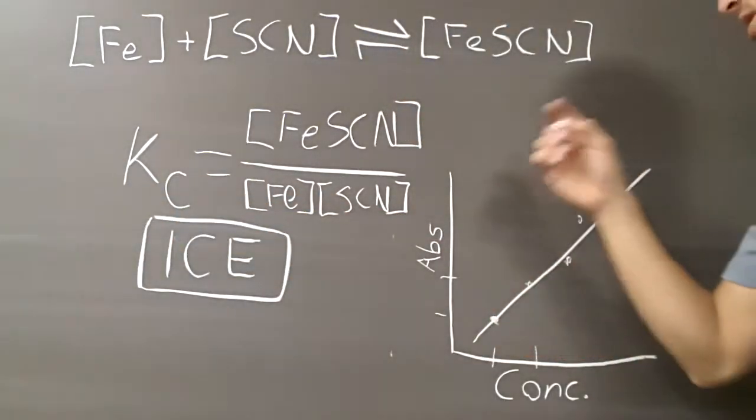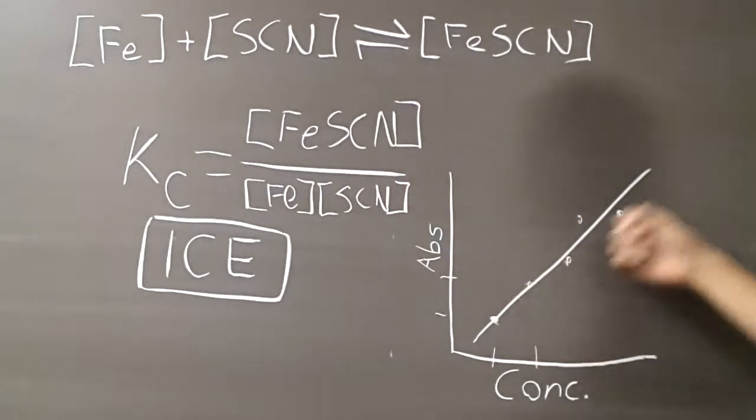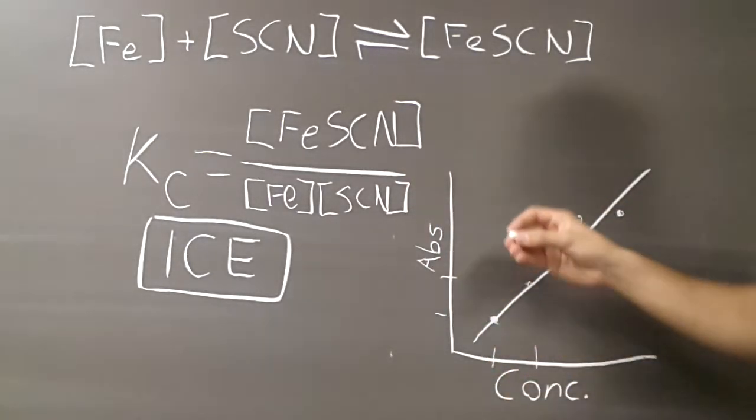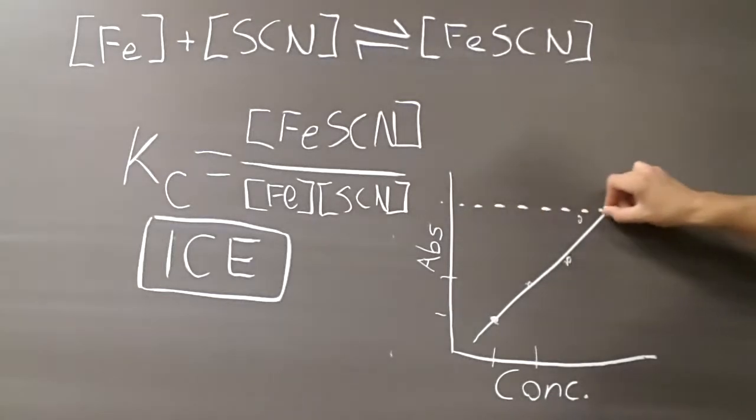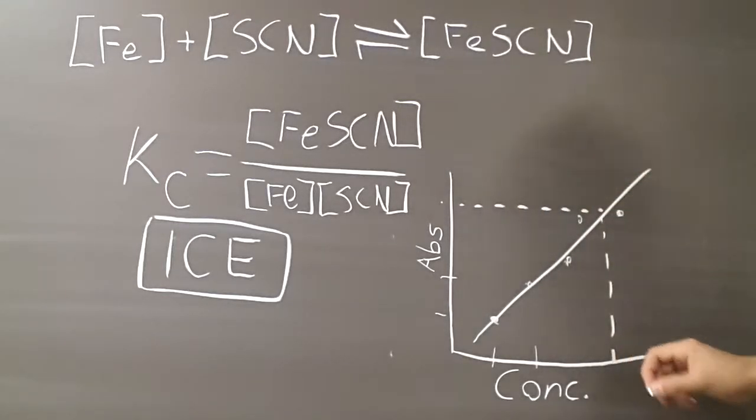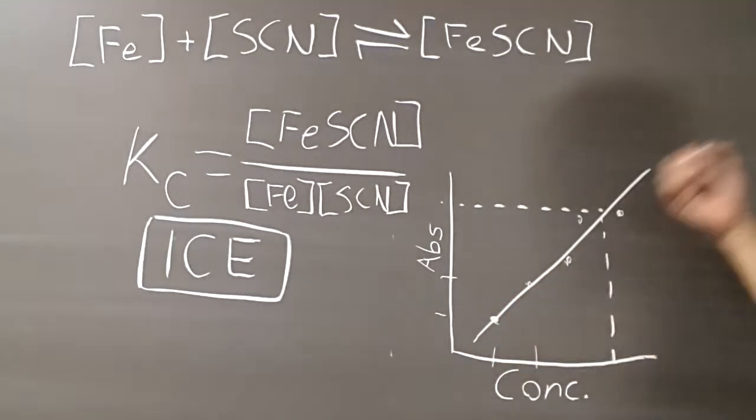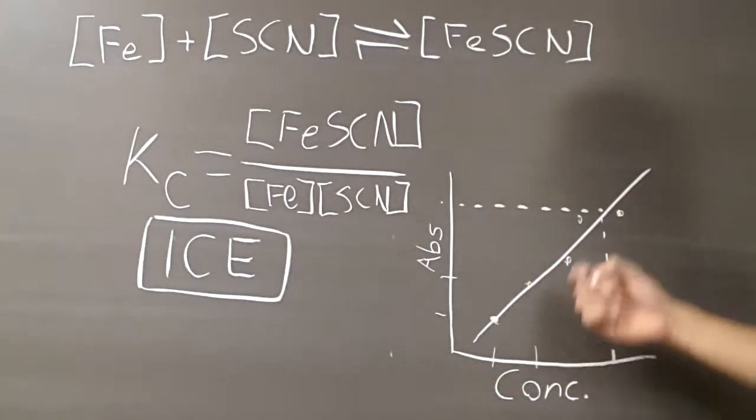Okay, so basically, now that we have this part, in part three we're going to be given absorption values. So using those absorption values, we can find where on the graph we would expect to have that concentration of iron thiocyanate, since it's a nice linear problem.